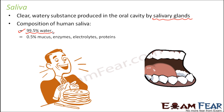Saliva is composed of 99.5% water, so it is basically almost entirely water. Only 0.5% consists of other substances like mucus, enzymes, electrolytes, and proteins. It is a very diluted fluid. However, the mucus and enzymes play a vital role in the process of digestion. Mucus is a slimy substance that makes things slippery, helping to make the food softer and help it move inside the food pipe. The enzymes also help by breaking down carbohydrates from complex to simpler forms.